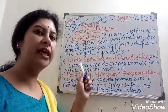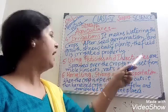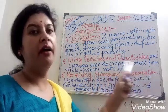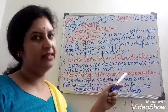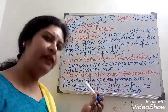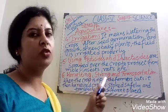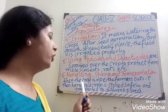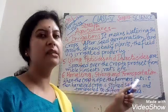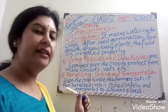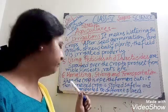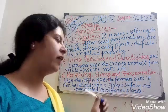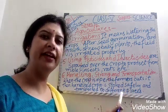Fifth, using pesticides and insecticides — these are spread over the crops to protect them from rats, moles, insects, etc. And the last stage is harvesting, storing, and transportation. When the crop is ripe, the farmers cut it. This is known as harvesting. The harvested crop is stored safely and transported to different places.